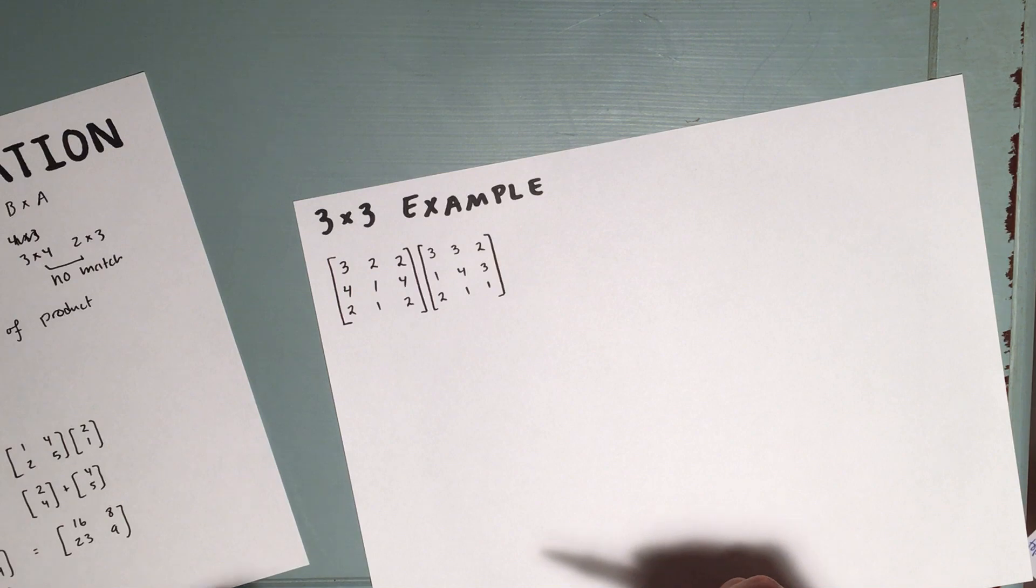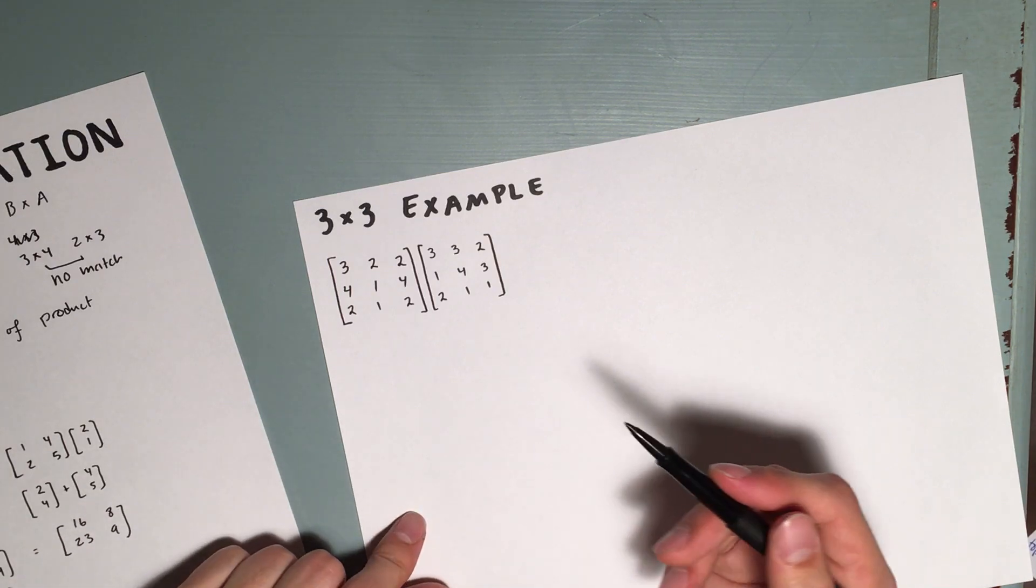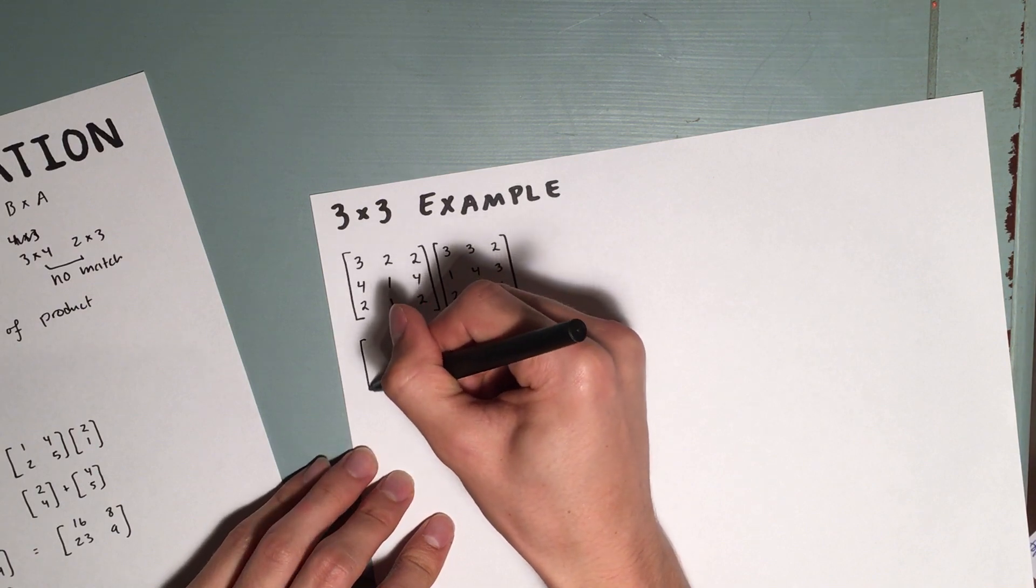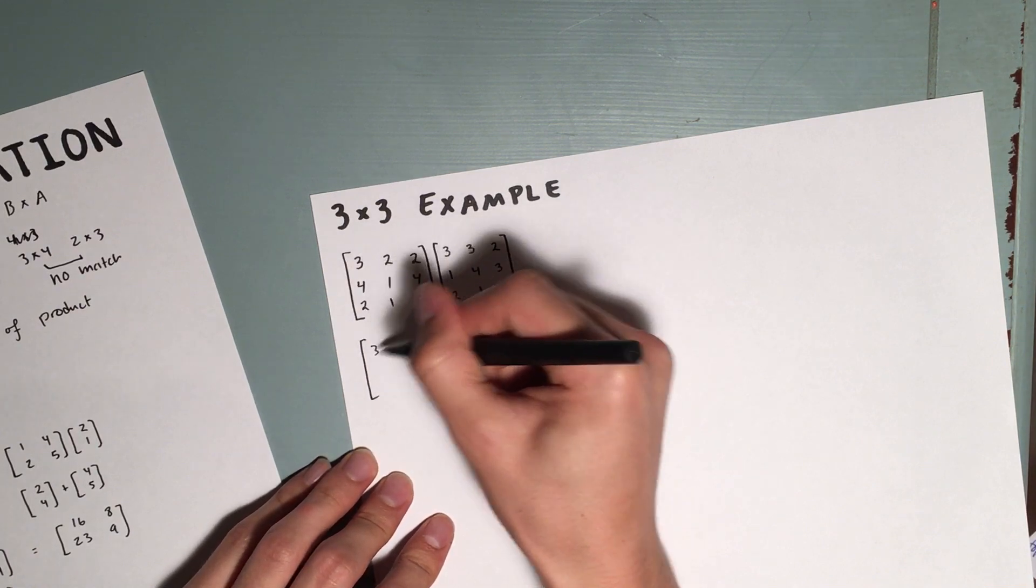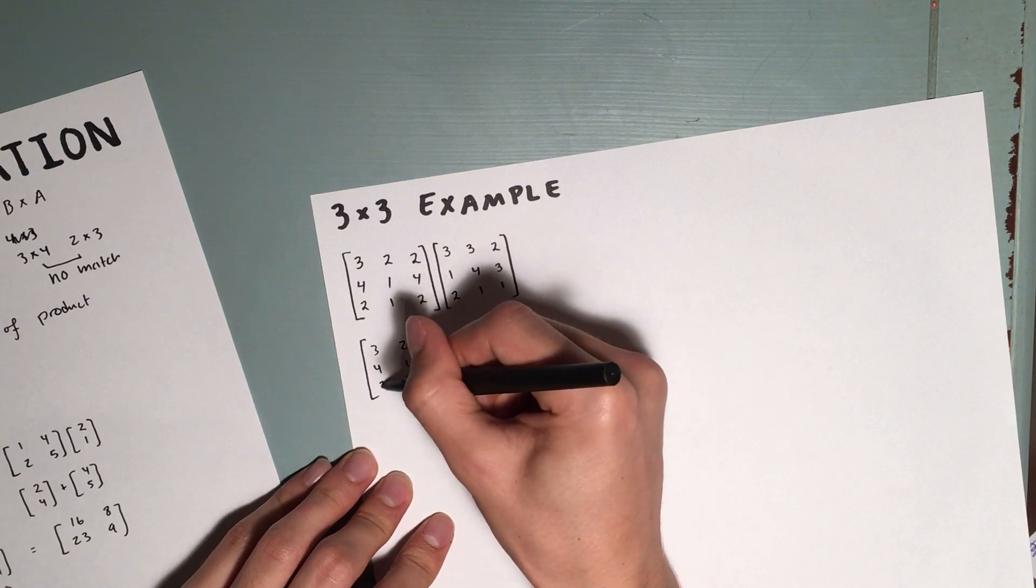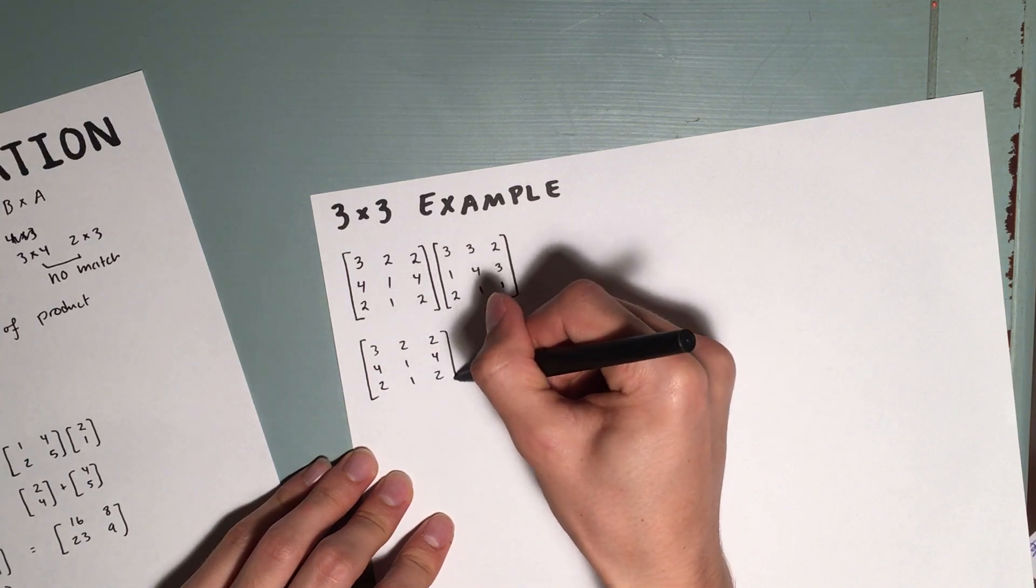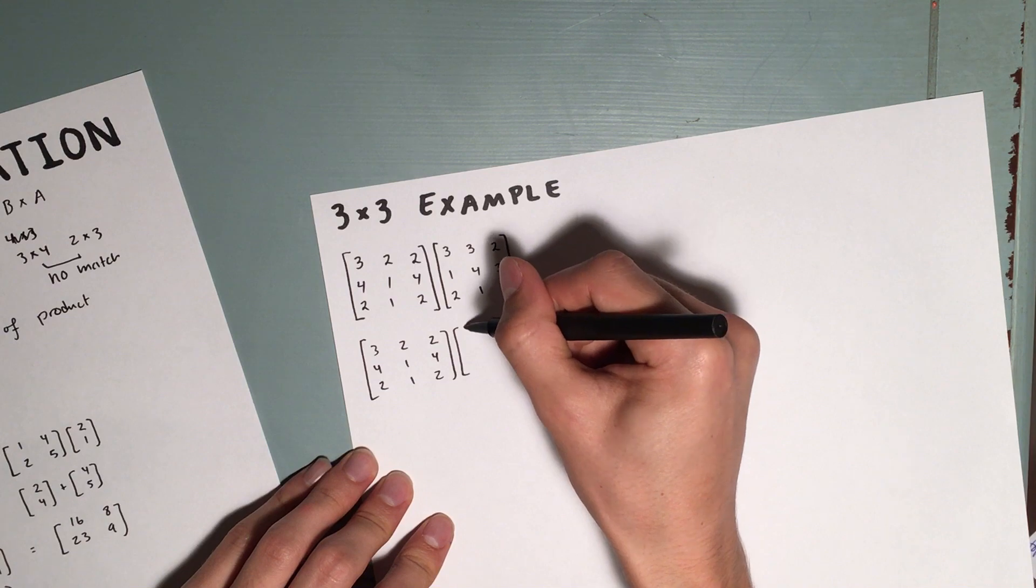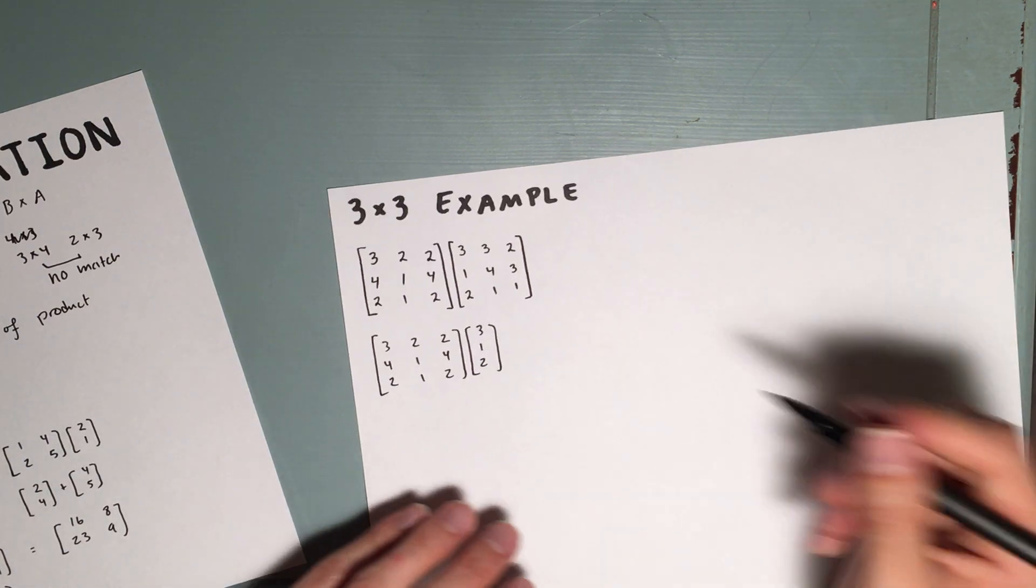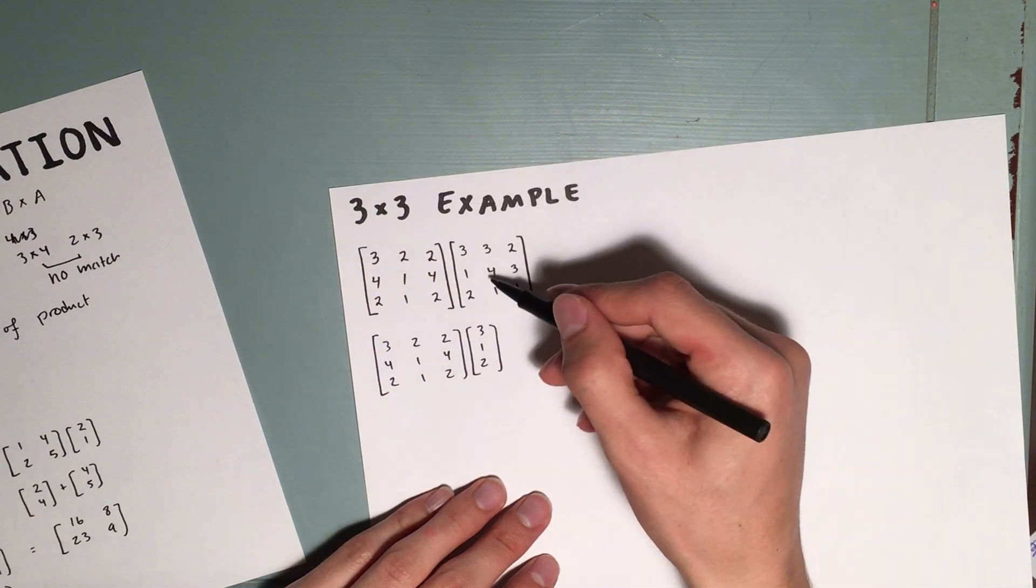I'm going to use my original method again, because with this many calculations, I'd really prefer not to make a mistake. Bear with me if I do. So I'm going to rewrite the first matrix. 3, 2, 2, 4, 1, 4, 2, 1, 2, and the first column. 3, 1, 2. I'm going to write the same thing again two more times, but with the second and third column.